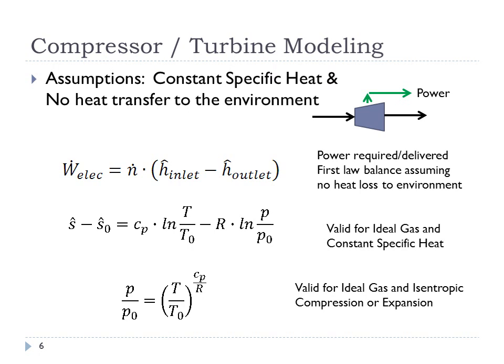We have three unknowns: outlet temperature, power, and internal entropy generation. We have two equations — the first law and the second law. We'll add a third equation by defining the isentropic efficiency. So we now have three equations and three unknowns: first law, second law, and the definition of isentropic efficiency, solving for temperature, power, and internal entropy generation.